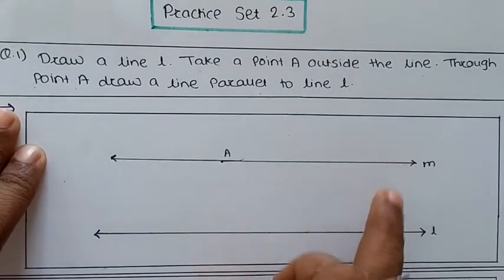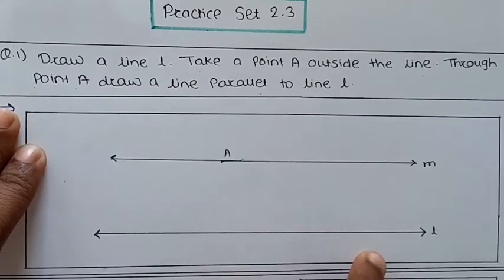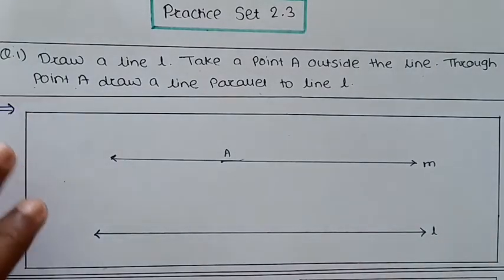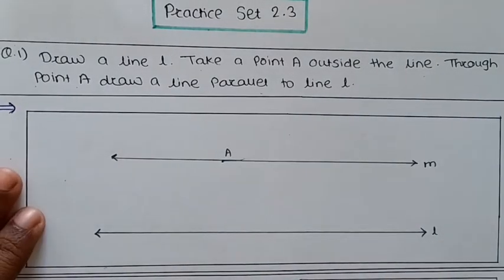This line is the parallel line. Suppose we name it line M. So line M is parallel to line L. In this way we solve the first question.